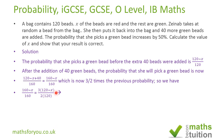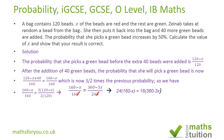We say (160 minus X) divided by 160 is equal to 3 over 2 times the previous probability. Opening up the brackets, we have (160 minus X) divided by 160 is equal to (360 minus 3X) divided by 240. Dividing the denominators by 10 and cross multiplying, we get 24 times (160 minus X) equals 16 times (360 minus 3X). Dividing by 8 gives us 3 times (160 minus X) equals 2 times (360 minus 3X).